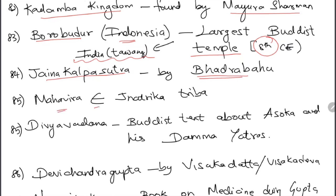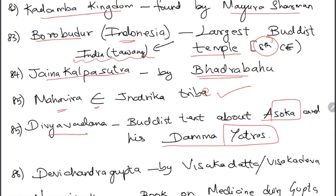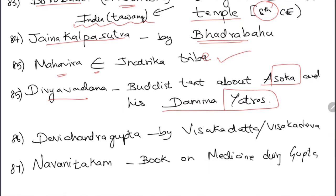Mahavira belonged to the Nyatrika tribe. Divyavadana is a Buddhist text about Ashoka and his Dhamma Yatras. Devichandraguptam was written by Vishakhadatta — the same author also wrote Mudrarakshasa. This is why facts are shuffled, so you connect them and don't forget.